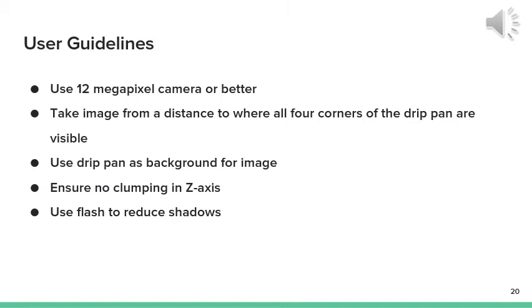The more detailed constraints of this vision system are the camera must be 12 megapixels or better. The image must be taken from a distance to where all four corners of the drip pan are visible. The background of the image must be the drip pan. Ensure that there are no clumping in the z-axis and to use the flash to reduce any shadows that may occur.